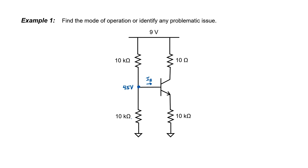That's neglecting the base current. The voltage in reality at the base is going to be a little bit smaller than that because the current draw of the base will tend to lower down the voltage. Whether or not the base current is negligible is an assumption we'll have to check in a moment. We're now going to assume that the transistor is turned on. If we reach a contradiction, we'll know that assumption is wrong.